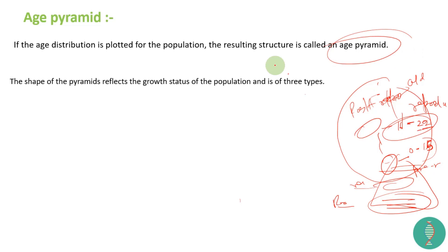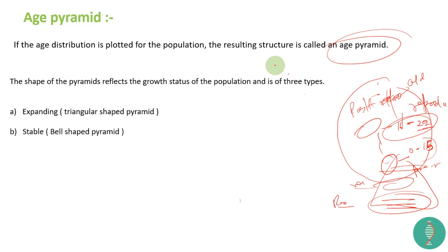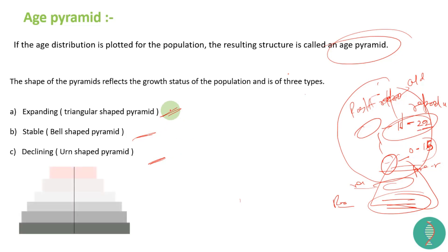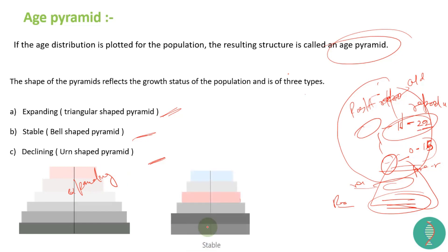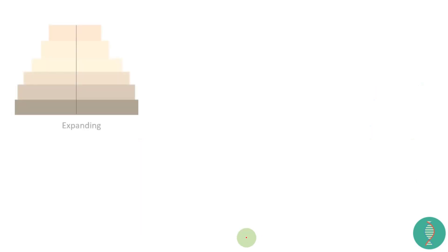The shape of the age pyramid tells us the growth status of the population. There are three types: expanding — triangular shaped; stable — bell shaped; and declining. These three pyramid shapes represent different population growth scenarios.